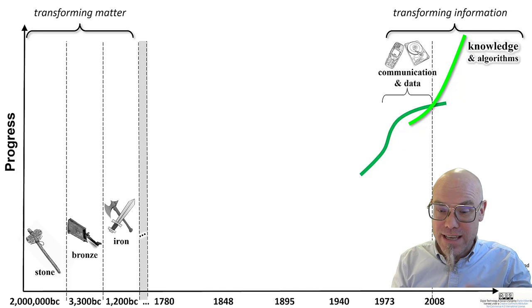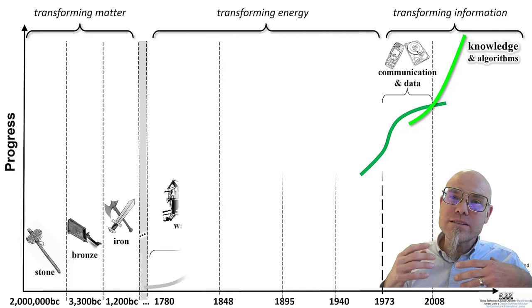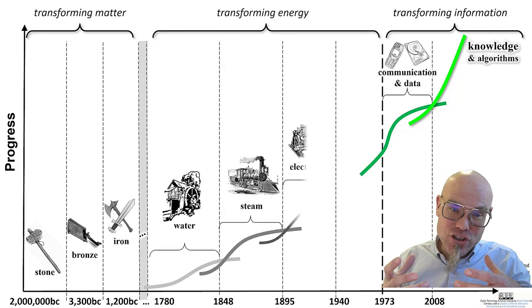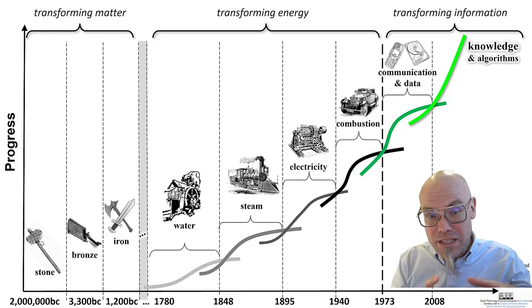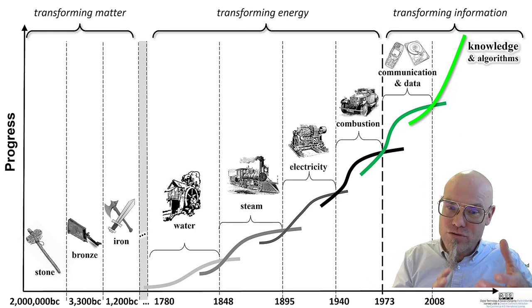The stone age, the bronze age, the iron age. When we started to master energy, the transformation of energy, we did that in different steps: water with the water mills, steam engines, electricity, combustion engines, and so forth.